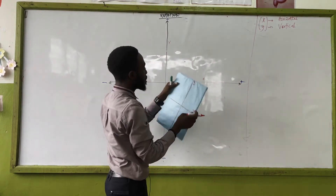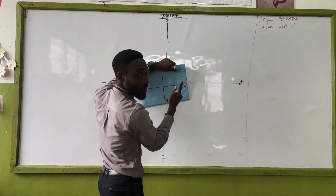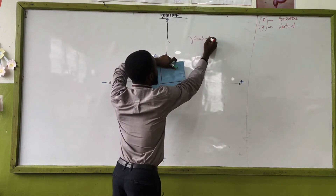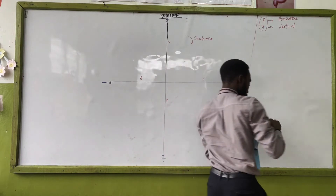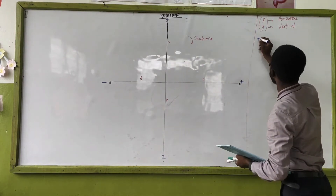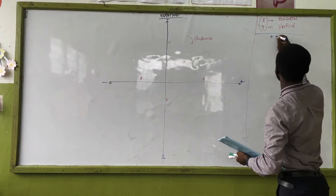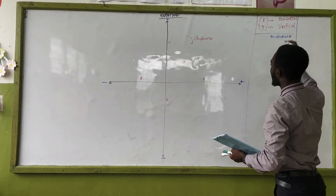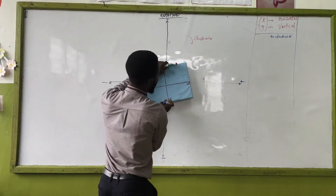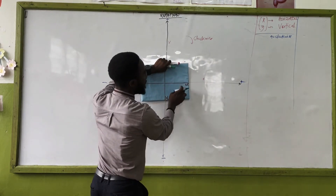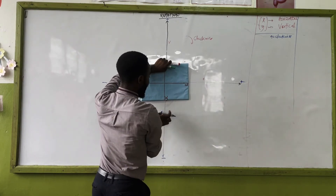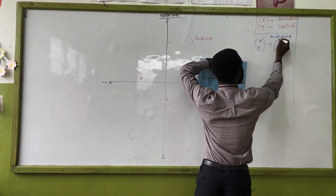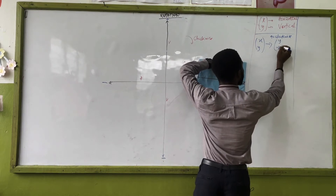So at 90° clockwise, my horizontal becomes positive y and my vertical becomes negative x. So the rule for 90° clockwise is: x and y gives you positive y and then negative x. That is, (x, y) → (y, -x).